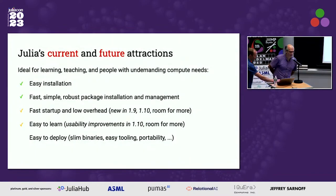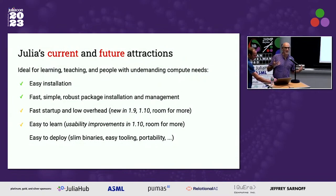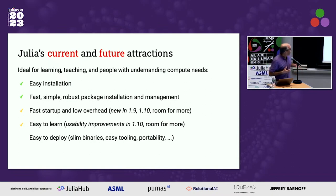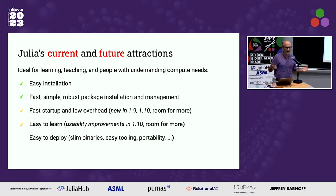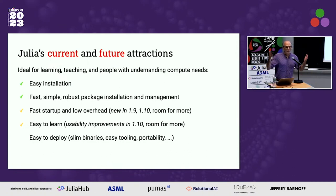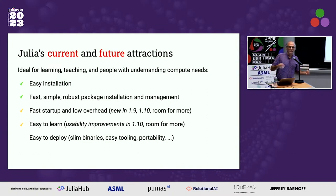Julia is getting easier and easier to recommend to newcomers. It has great features: ease of installation, an excellent package manager, and latency is getting much better. This lowers the barrier for people with undemanding compute needs. There are more good learning materials and improved error messages. One remaining area holding it back is that you can't always easily write deployable code — once that barrier is overcome, there may be no technical reason not to make Julia the language of Comp Sci 101.